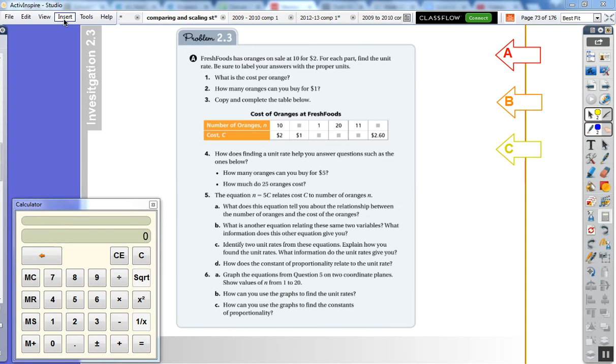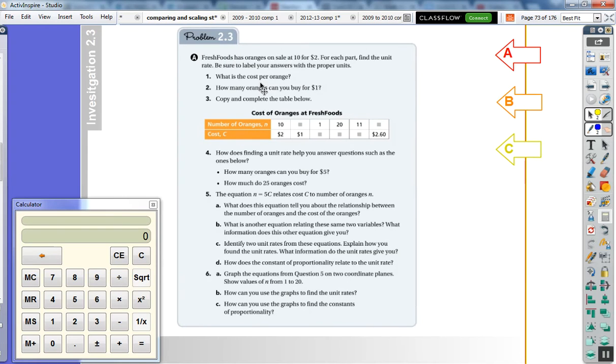So what is the cost per orange? We talked at great length that the word per means divide. So we are doing cost divided by orange, which means $2 divided by 10. That means it's one-fifth, and one-fifth is equal to 20 cents. Every orange is worth 20 cents per orange.